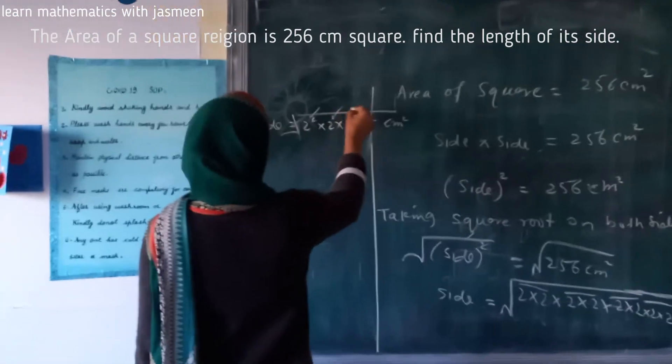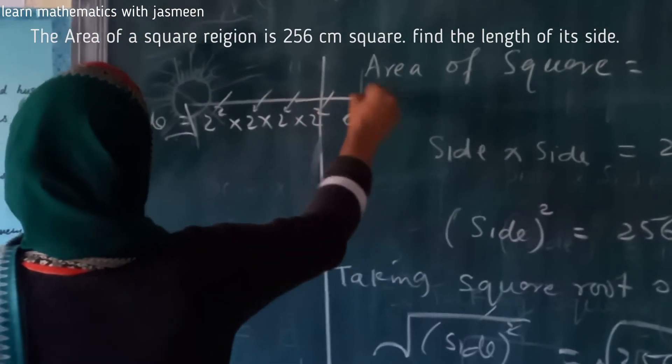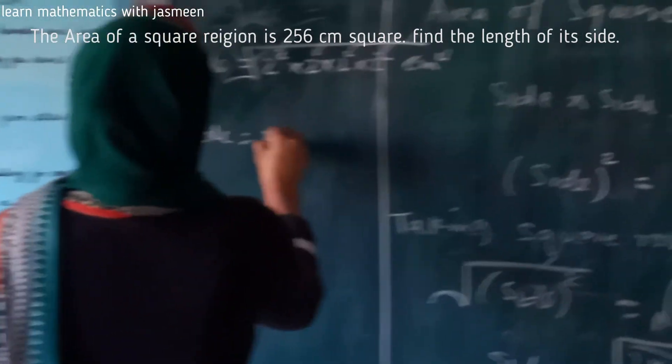The square root cancels. The side is equal to 16 centimeters.